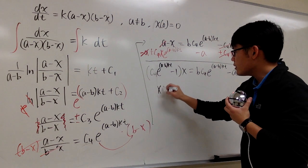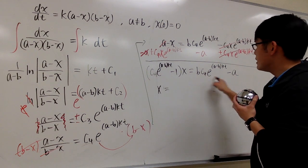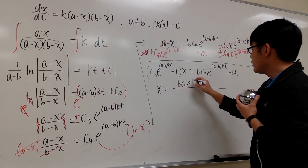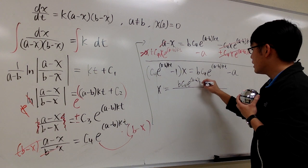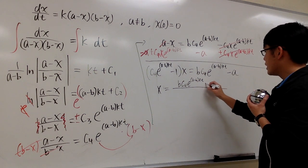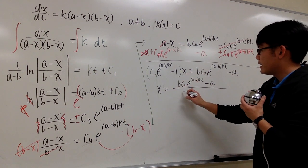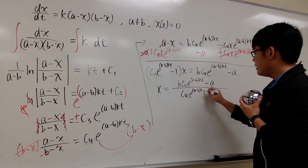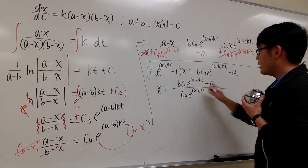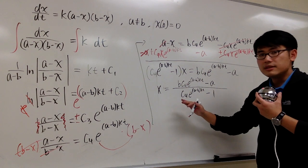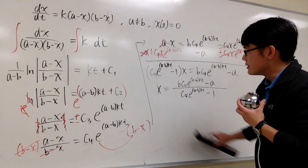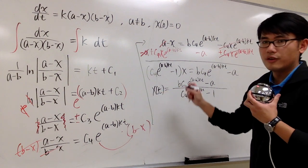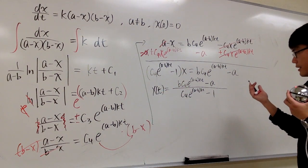So x(t) equals (bc4 e to the (a minus b)kt minus a) divided by (c4 e to the (a minus b)kt minus 1). This is the general solution, where x is a function of time t.